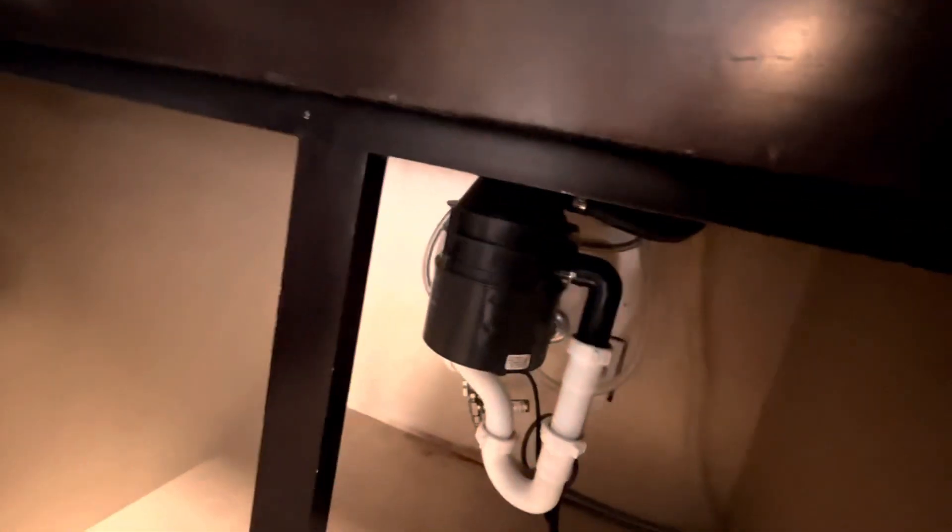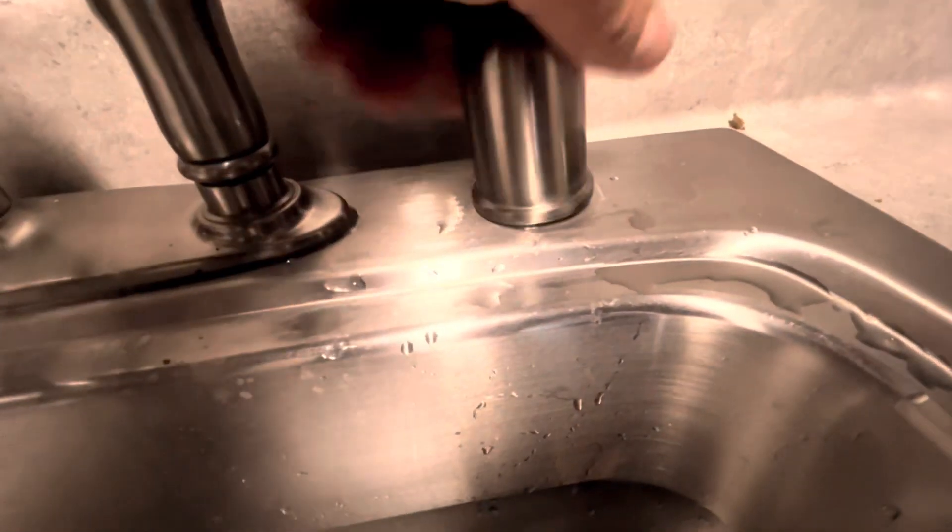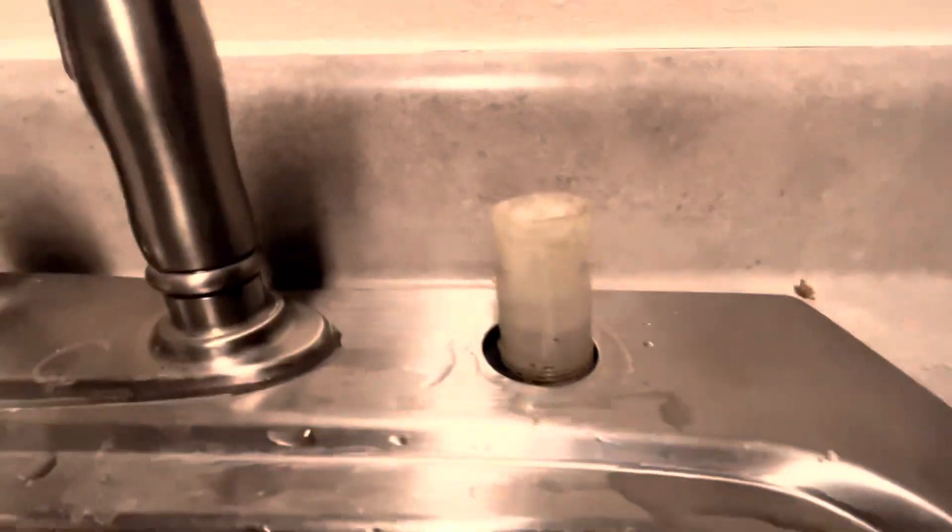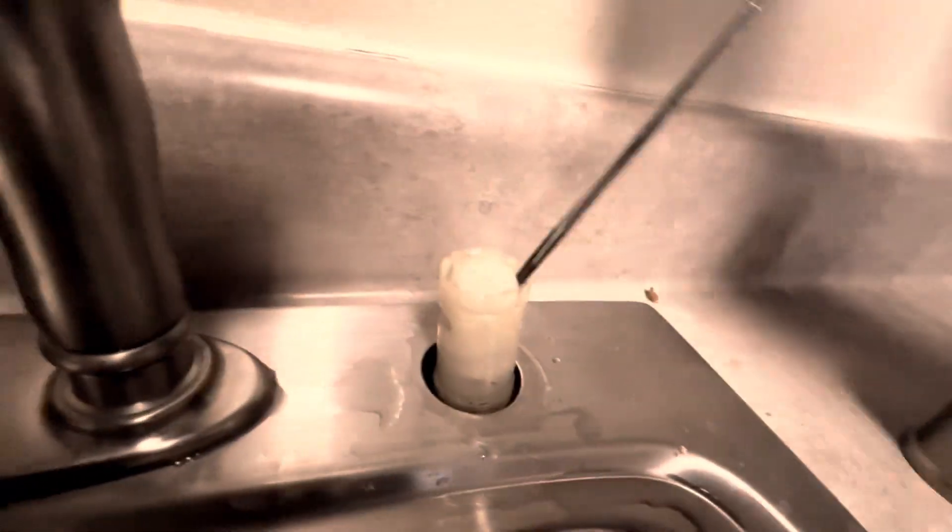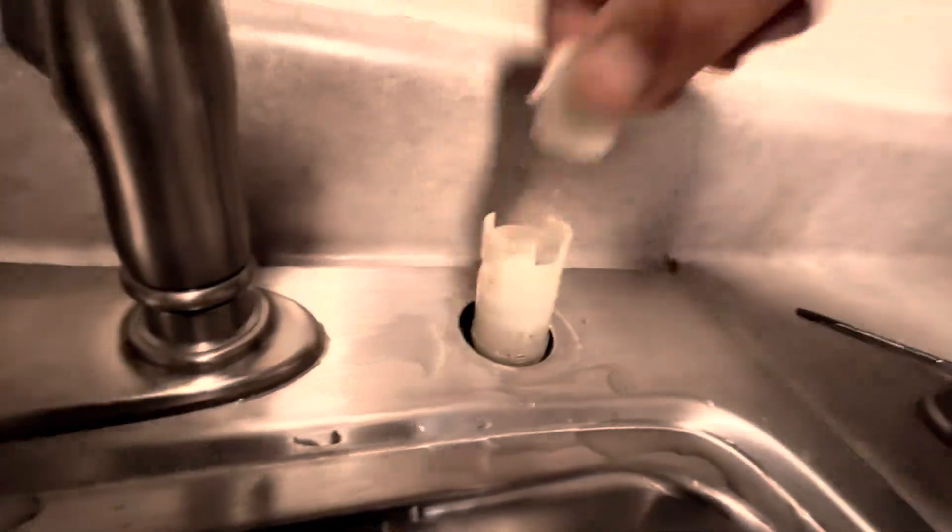So this hose that I just pointed to, that's what's clogged. The first thing we need to do is undo this vent. If it was super easy, we could just pop this top off, remove the obstruction, and be done with it. But unfortunately, there's a lot more food in this line.